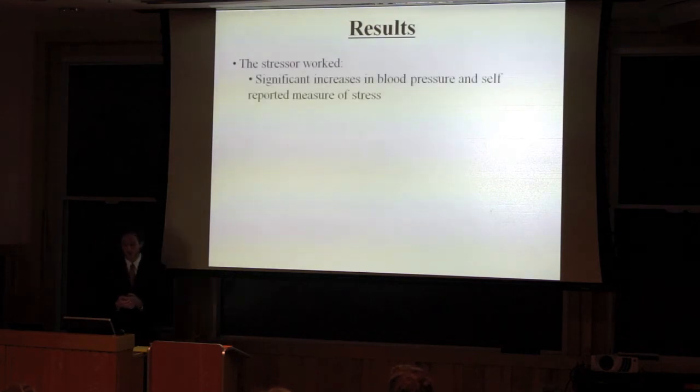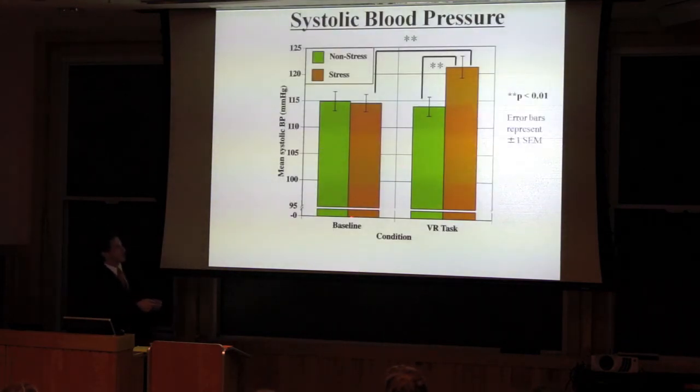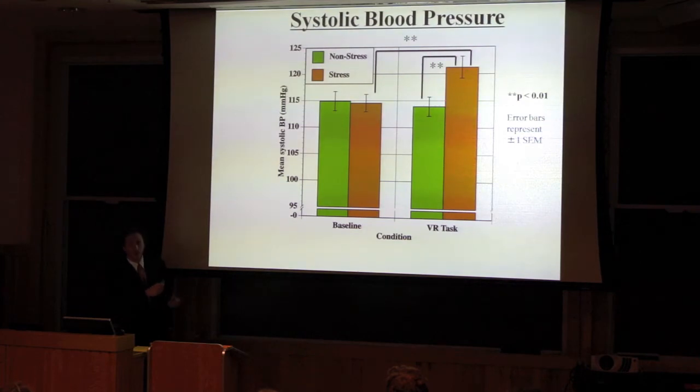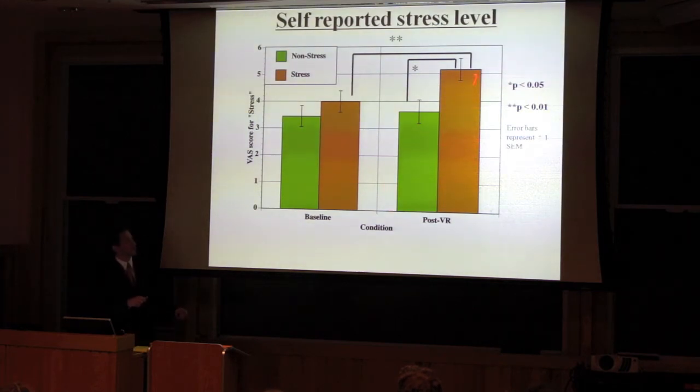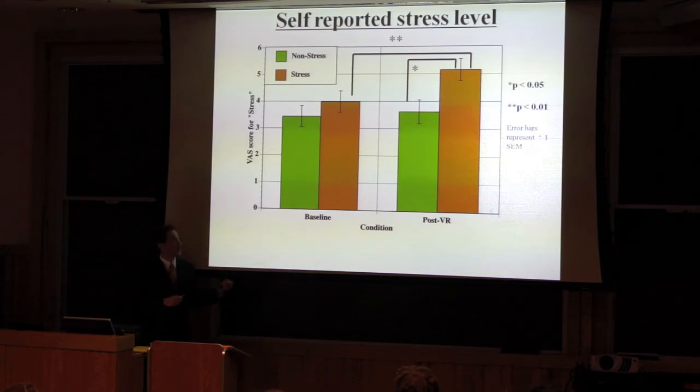Results. First of all, the stressor really worked. This is the baseline period while they were just filling out surveys and sitting quietly, and this is while they were doing the computer task. Green bars are the non-stress group, orange bars are the stress group. We can see that people who were doing the computer task in the stress group had significantly higher blood pressure, both significantly higher than during their own baseline period, and from the people in the non-stress group performing the computer task. This is also the same for individuals who were asked to rate how stressed do you feel. People in the stress group felt significantly more stressed after they completed the computer task.